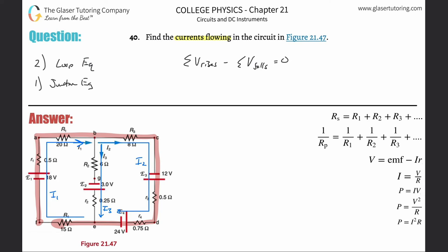I put a negative sign in front of the falls category so I don't have to plug in negatives for individual items. I'll distribute the negative at the end. Starting at F and traveling up, I cross a battery — going from the shorter line (negative) to the bigger line (positive), so potential is rising. That's 18 volts, which goes in the rises category.